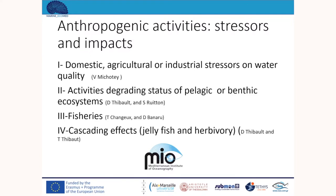Anthropogenic activities, stressors and impacts. Part 1: domestic, agricultural or industrial stressors on water quality. Part 2: activities degrading the status of pelagic or benthic ecosystems. Part 3: fisheries. Part 4: cascading effects with the example of jellyfish and herbivory. The different parts will be presented by specialists of the corresponding field, all of them doing research at the Mediterranean Institute of Oceanography in Marseille.